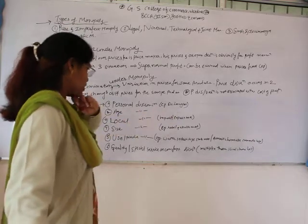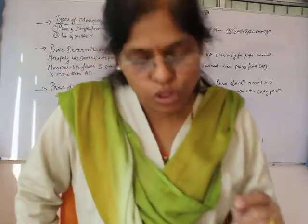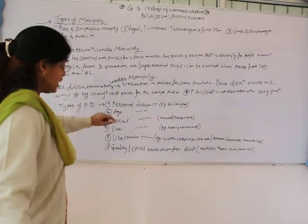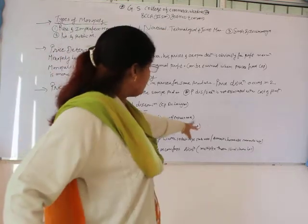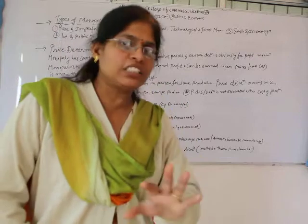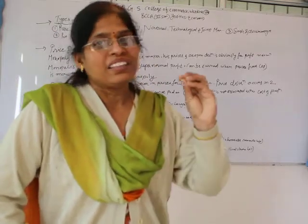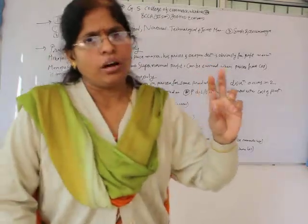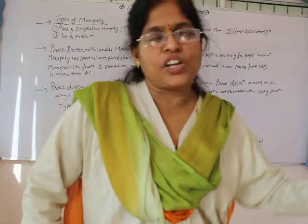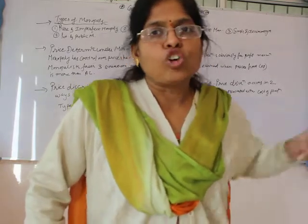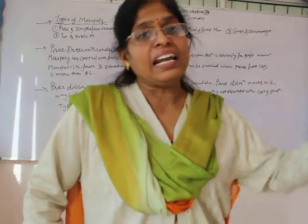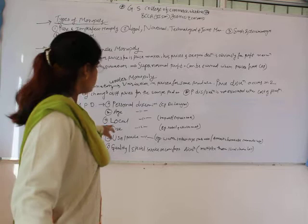Use and trade discrimination depends upon the type of use of the product. For example, water and electricity charges are levied at different rates for different uses. Electricity for a person running a manufacturing plant or business is charged at commercial rates, whereas electricity for domestic use is charged at lower rates to common people — that is use and trade discrimination.